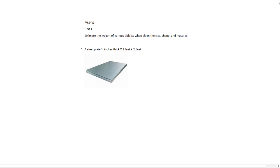The first question is that a steel plate is 3 quarters of an inch thick and is 3 feet by 2 feet in surface area. So this plate here, if we're going to draw it, is 1, 2, 3 by 2.